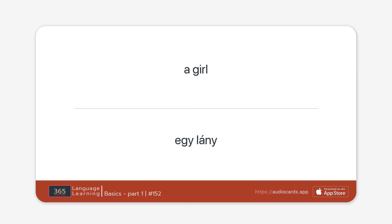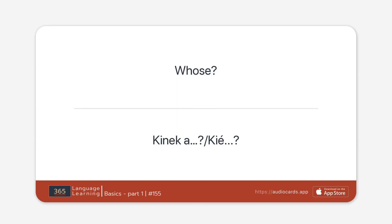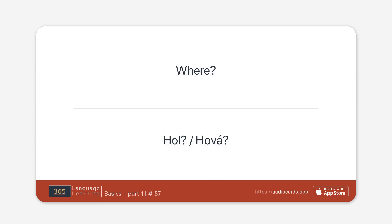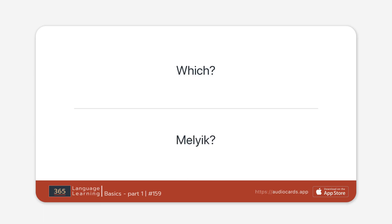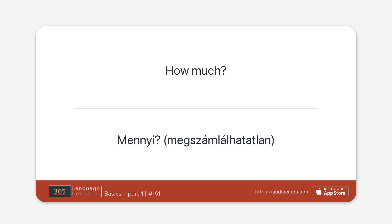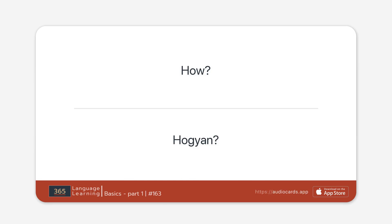Those rivers. Those bushes. Those hills. A boy. A girl. A man. A woman. Whose? What? Where? When? Which? Why? How? How much?